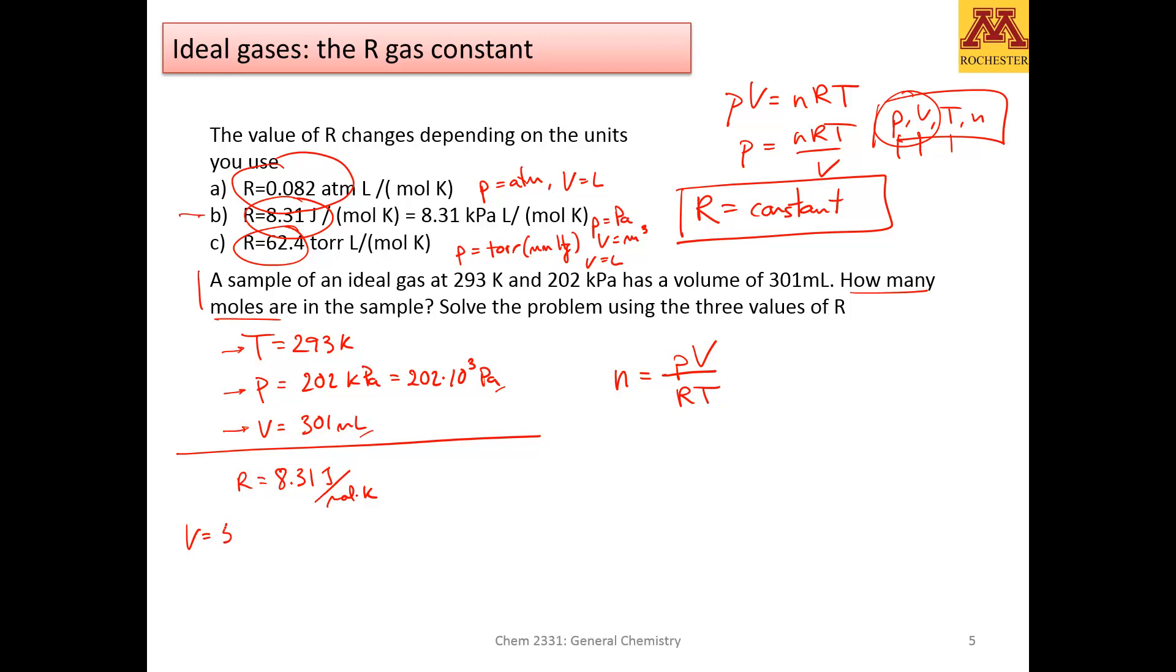In this case, the volume that is 301 milliliters, I need to convert that into cubic meters. I know that 10 to the 3 milliliters is 1 liter, and then 10 to the 3 liters is 1 cubic meter. So there you go, 3.01 times 10 to the negative 6 cubic meters.